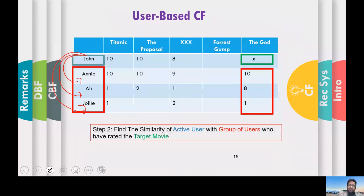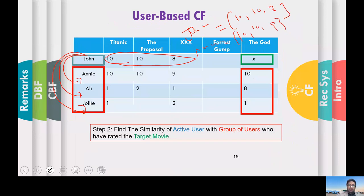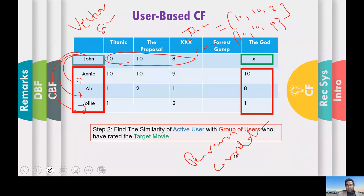To find similarity between them, John's profile is the vector [10, 10, 8] and Annie's profile is [10, 10, 9]. To find similarity between them, you can use any vector similarity. We usually use Pearson correlation because it is a much richer similarity measure.